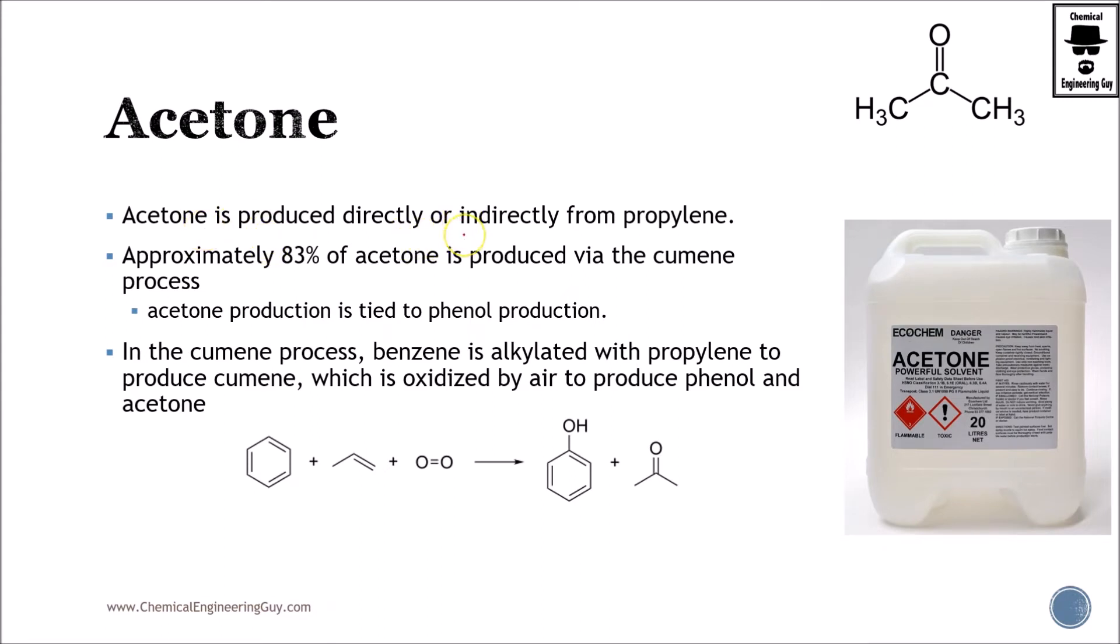Acetone is produced directly or indirectly from propylene. In this specific case we're going to see the alternative route which is the isopropanol route. Unfortunately, in real life 83% of the acetone is produced by the cumene process. Essentially a process which is focused on the phenol process. You produce benzene, then propylene, you produce the cumene process, then you further oxidize it to form phenol and a byproduct, acetone.